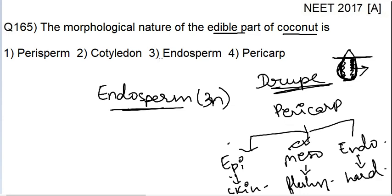The correct option is option number three, that is endosperm. It is not pericarp, it is not cotyledon, and it is not perisperm. Thank you.